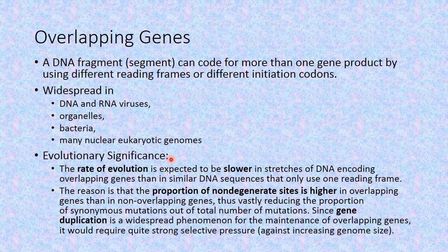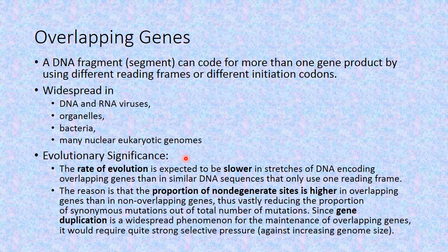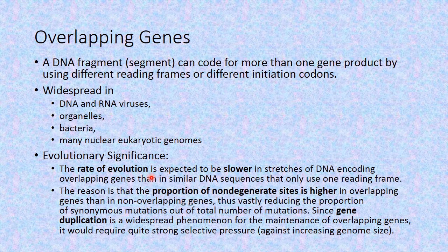These overlapping genes have immense evolutionary significance. One obvious importance is that they help in condensation, keeping the size of the genome small. Apart from that, overlapping genes involve gene duplication as a common occurrence. When multiple copies of a particular gene are present, the same mutation in all copies is not very common, so the original wild-type genes are maintained, and the rate of evolution is very slow.